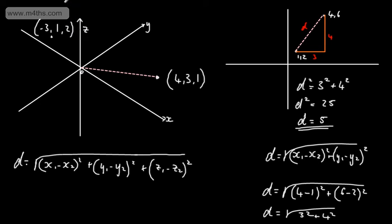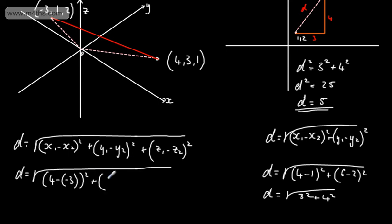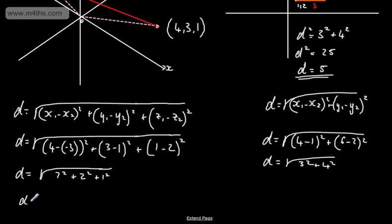What we want to do is find the distance between these two points using 3D Pythagoras. I'll take (4, 3, 1) as point 1 and (-3, 1, 2) as point 2. So the distance will be equal to the square root of (4 minus minus 3) squared, plus (3 minus 1) squared, plus (1 minus 2) squared. That gives us the square root of 7-squared plus 2-squared plus 1-squared, which is the square root of 49 plus 4 plus 1, giving us the square root of 54.